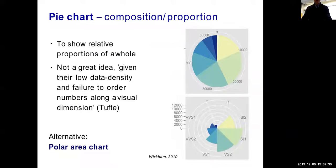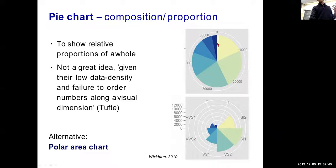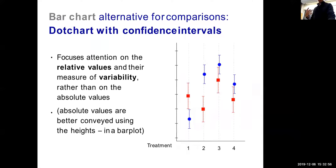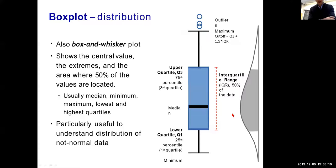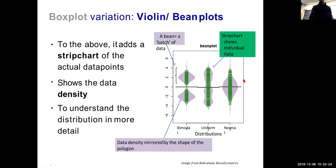Pie charts are generally a very terrible idea. Humans are very bad at interpreting pie charts because you're confused about whether you're looking at area or angle, and something at the top of the chart is interpreted differently than something at the left. Avoid pie charts if you can. Showing confidence intervals makes sense. Consider switching to a cumulative distribution if what you're trying to show is better reflected there. Box plots are super helpful — they capture ranges, medians, means, and outliers very nicely, whereas some distribution types hide all these things and make it hard to tell where things fall.